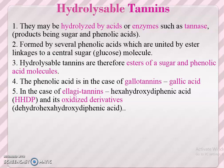Hydrolysable tannins may be hydrolysed by acids or enzymes. They are formed by several phenolic acids united by ester linkage to a central sugar molecule. Hydrolysable tannins are therefore esters of sugar and phenolic acid molecules. The phenolic acid in the case of gallotannins is gallic acid. In the case of ellagic tannins, it is hexahydroxydiphenic acid and its oxidized derivatives.